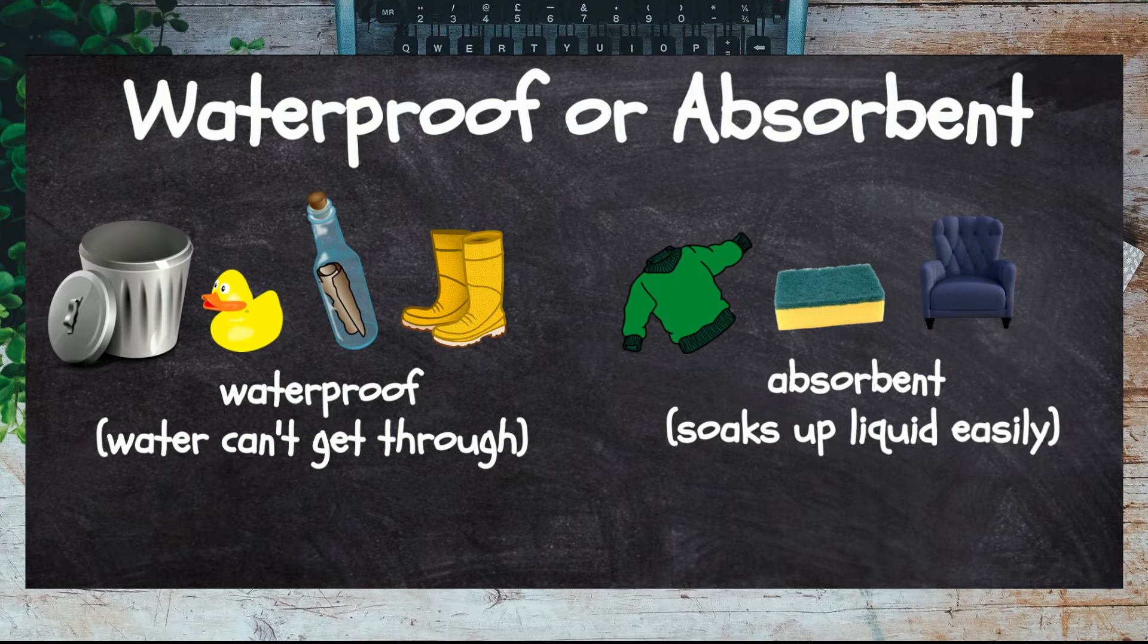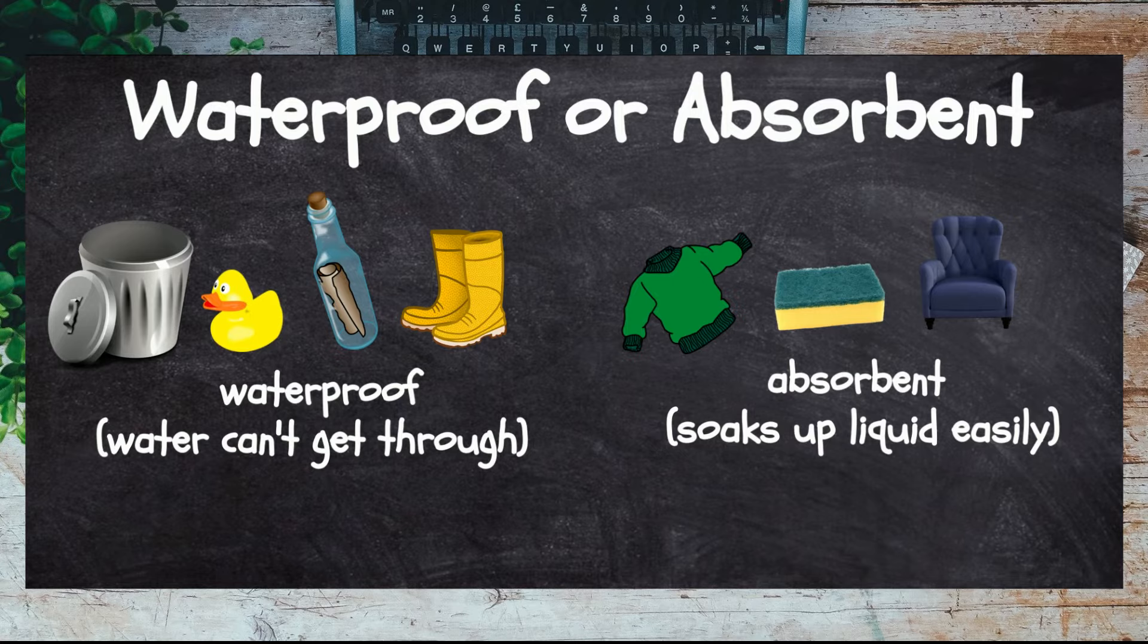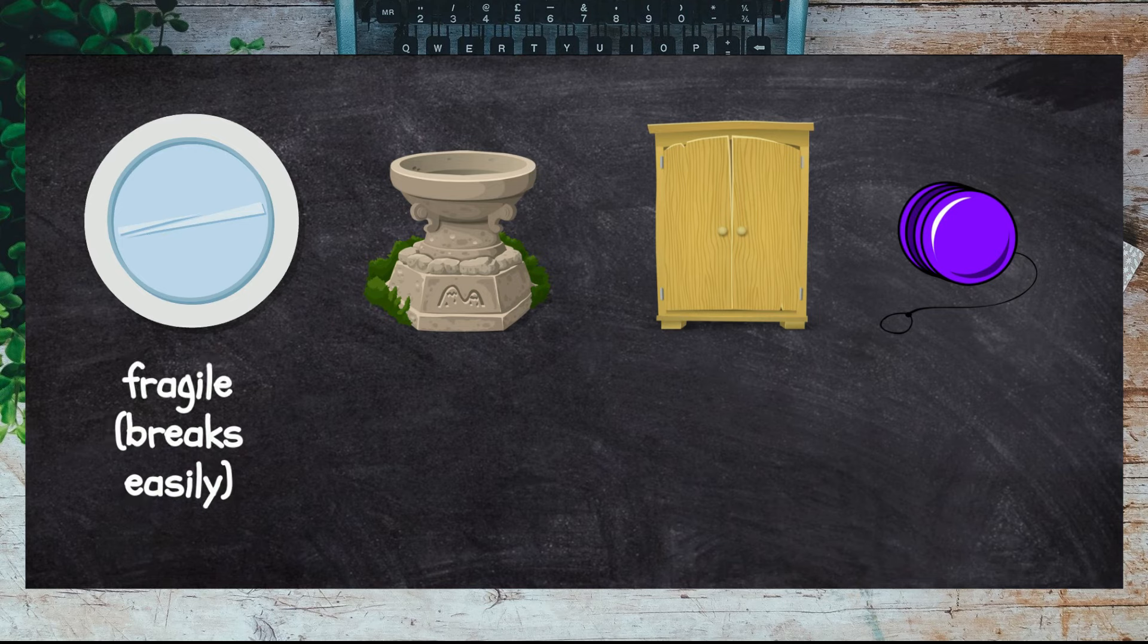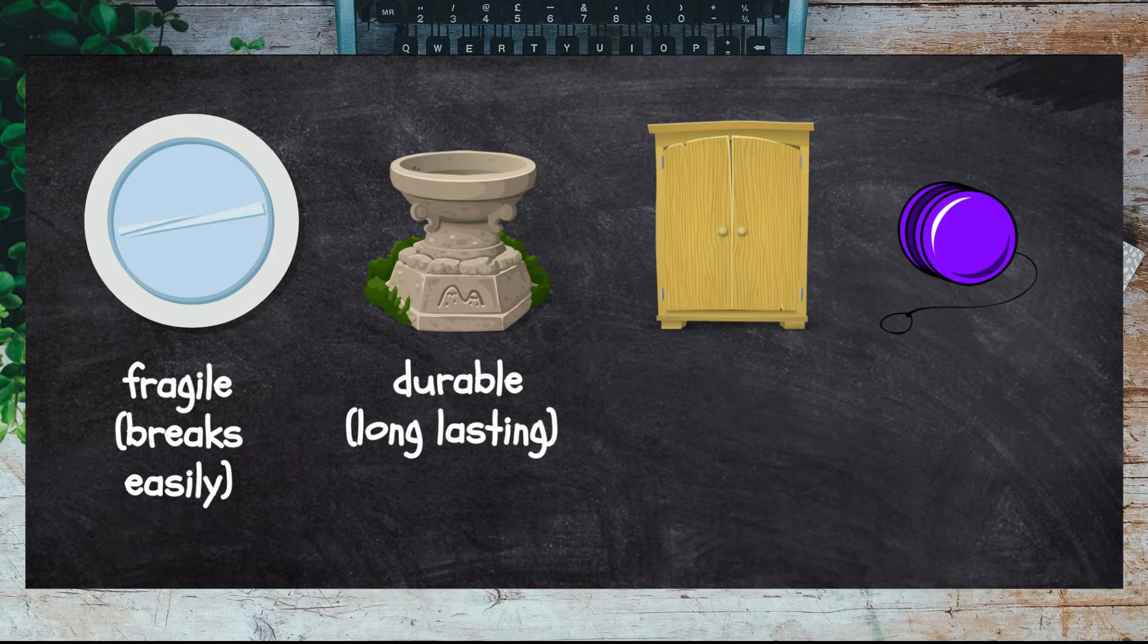Absorbent, on the other hand, means that it soaks up liquid easily, so sponges and clothing will usually be absorbent. Other properties may include fragile, meaning it breaks easily; durable, which means it will last a long time without breaking; and heavy and light, describing the weight of an object.